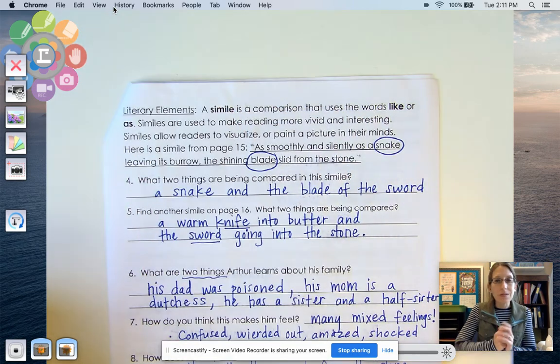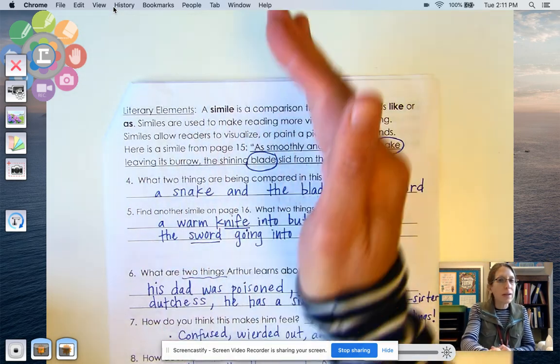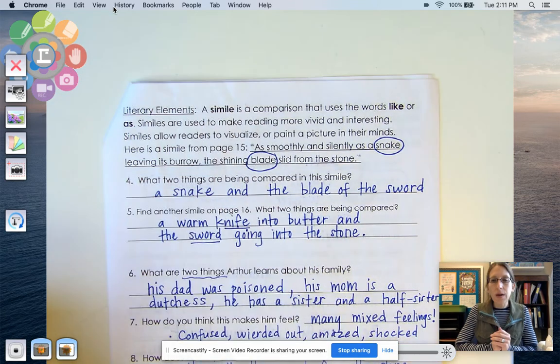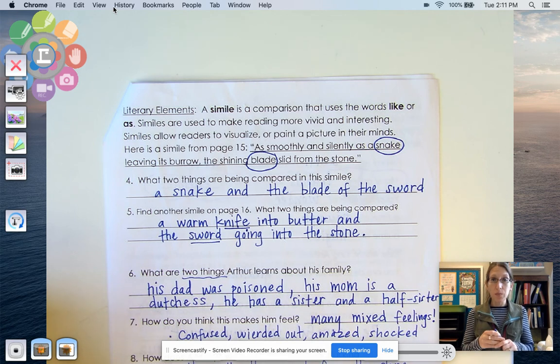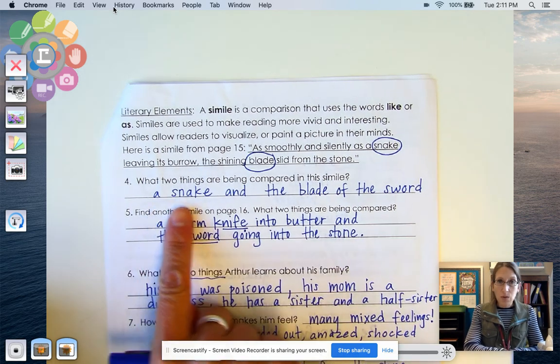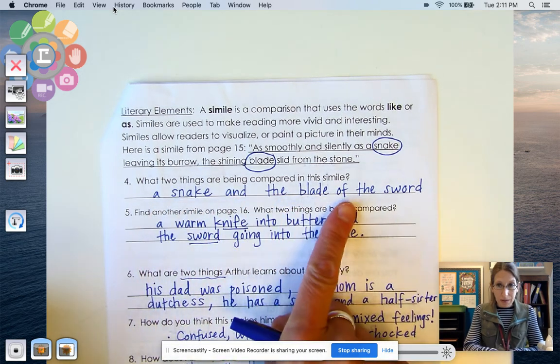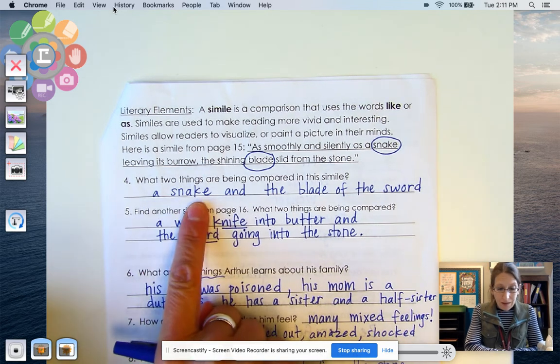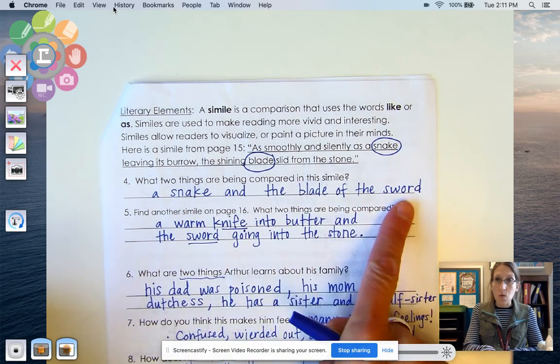There's no resistance. It's just like, oh, look at the little snake coming out of its burrow. Just very smooth. And that is just what happened, like what happened when Arthur pulled the sword out. In fact, it was so easy, it just slid right out. So for number four, we have what two things are being compared in this simile. So we're comparing a snake and the blade of the sword.